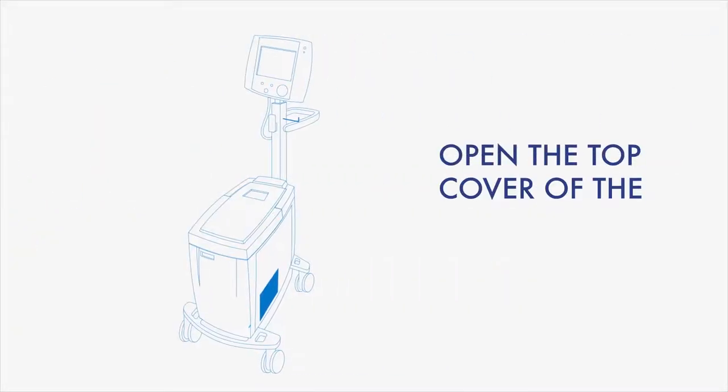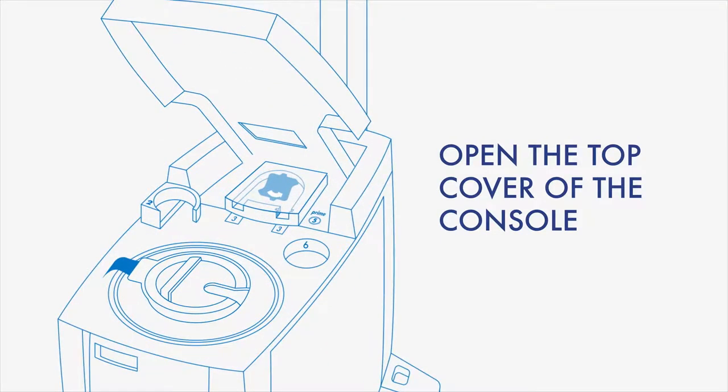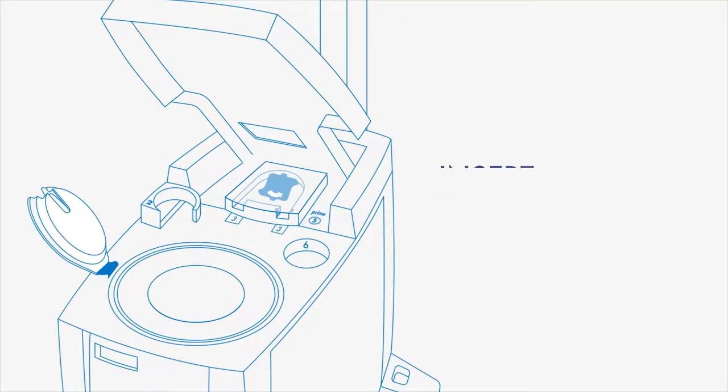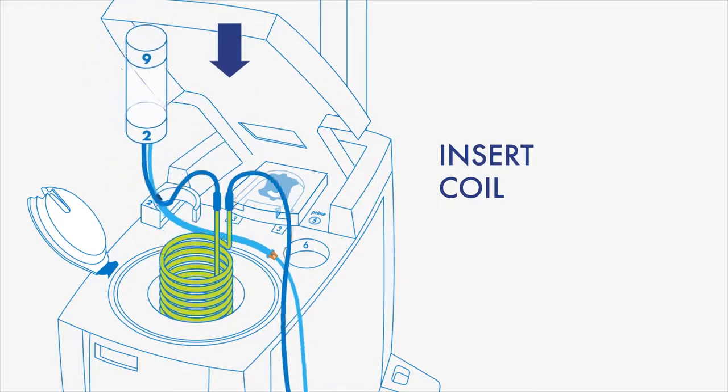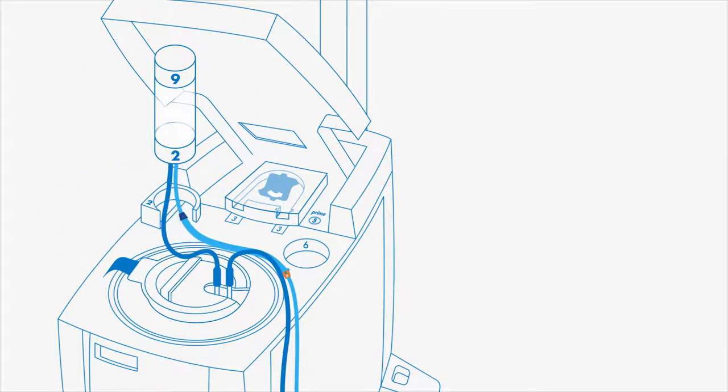Open the top cover of the console. Lift the well cap and place the coil into the coolant well. Close the cap, passing the tubes through the slit.